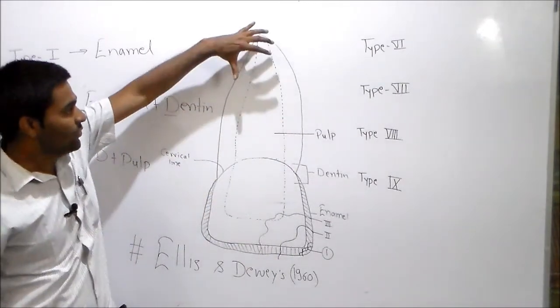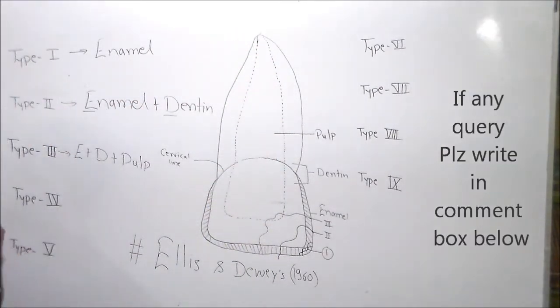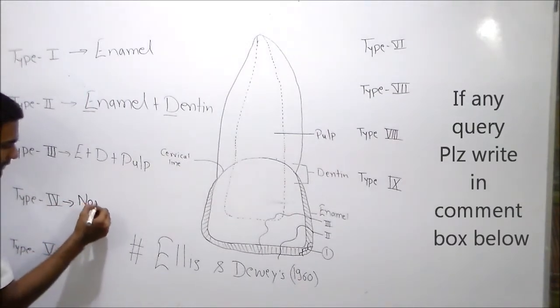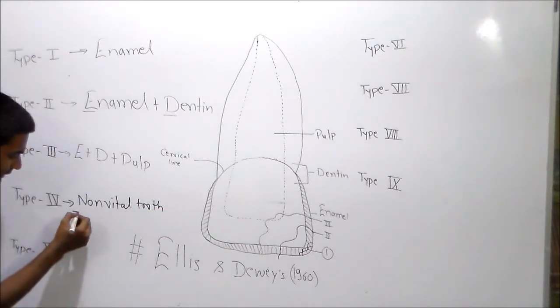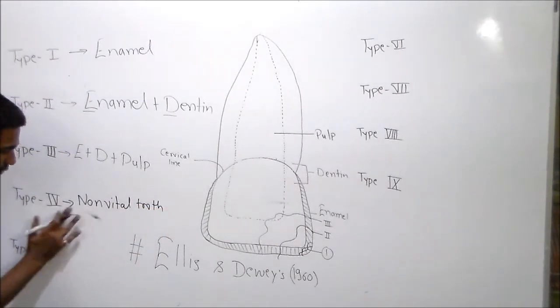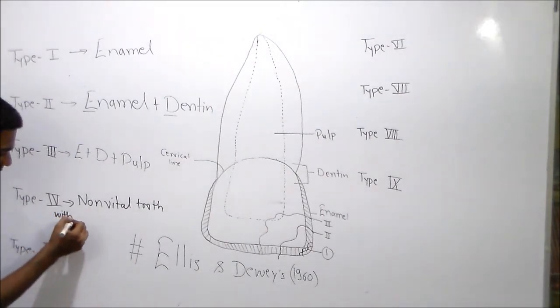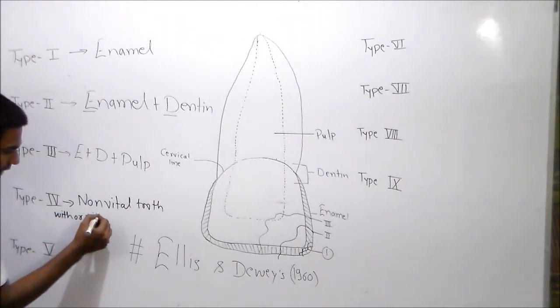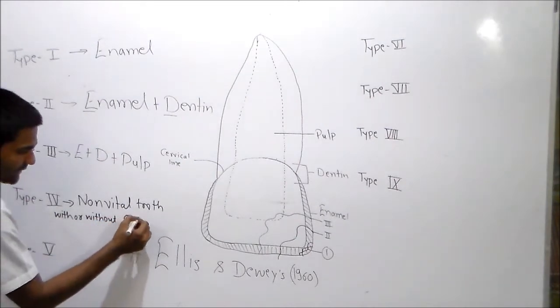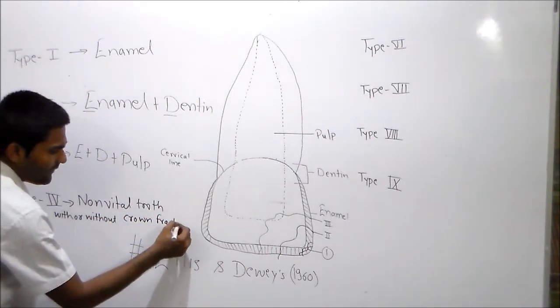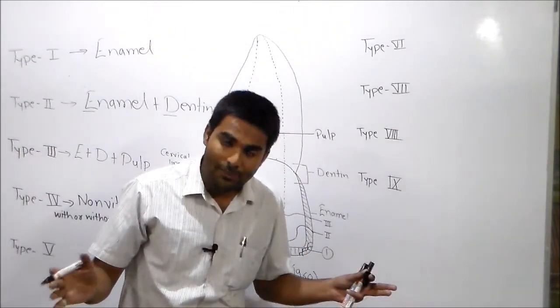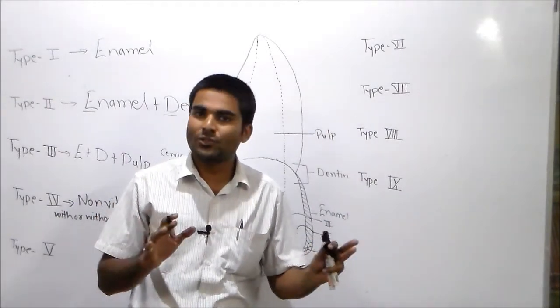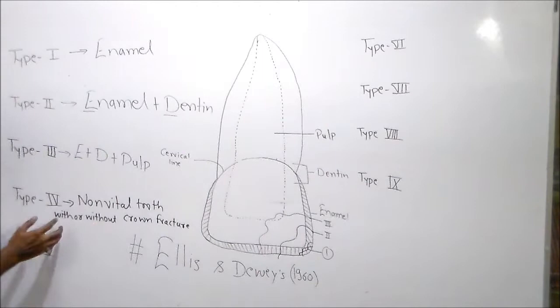Now we can do all the tooth damage. That means non-vital tooth, non-vital tooth with or without crown fracture. Sometimes a patient presents at our clinic where the tooth is dead but there is no breakage at all, no fracture at all. This is Ellis class 4 fracture.